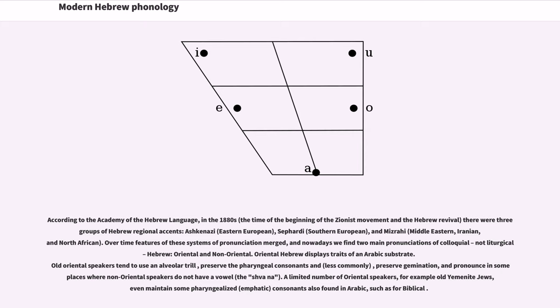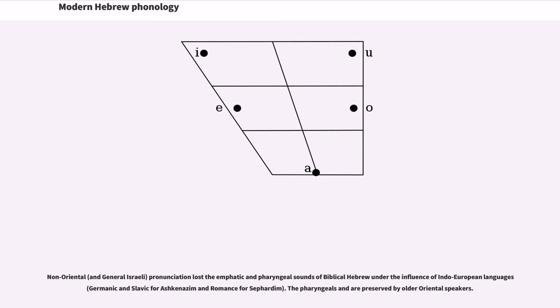A limited number of Oriental speakers, for example old Yemenite Jews, even maintain some pharyngealized (emphatic) consonants also found in Arabic, such as tet for biblical qof. Non-Oriental and general Israeli pronunciation lost the emphatic and pharyngeal sounds of biblical Hebrew under the influence of Indo-European languages (Germanic and Slavic for Ashkenazim and Romance for Sephardim). The pharyngeals ayin and het are preserved by older Oriental speakers.